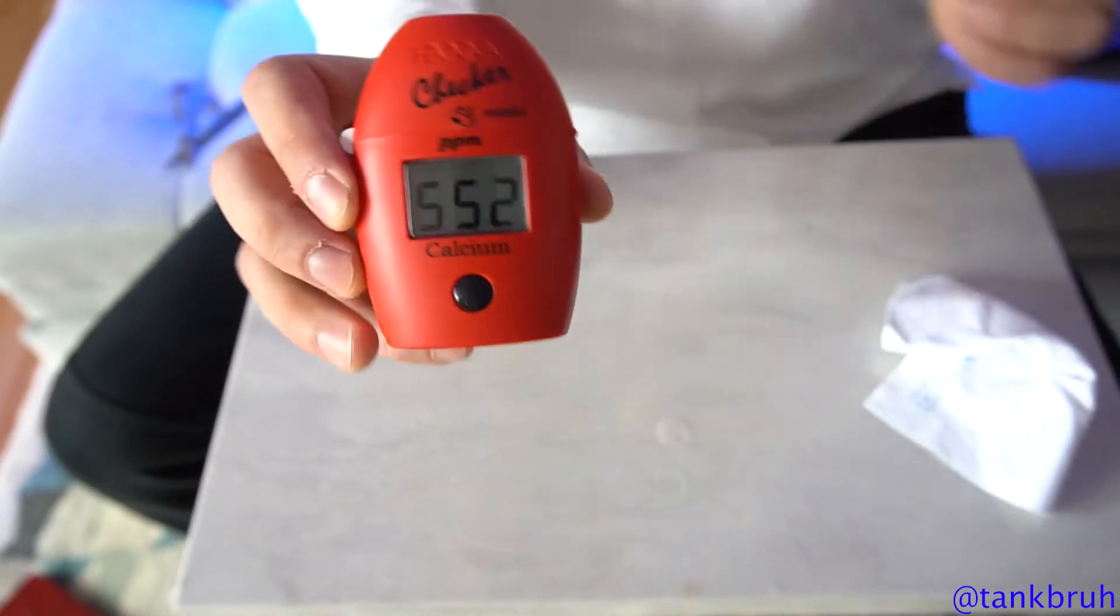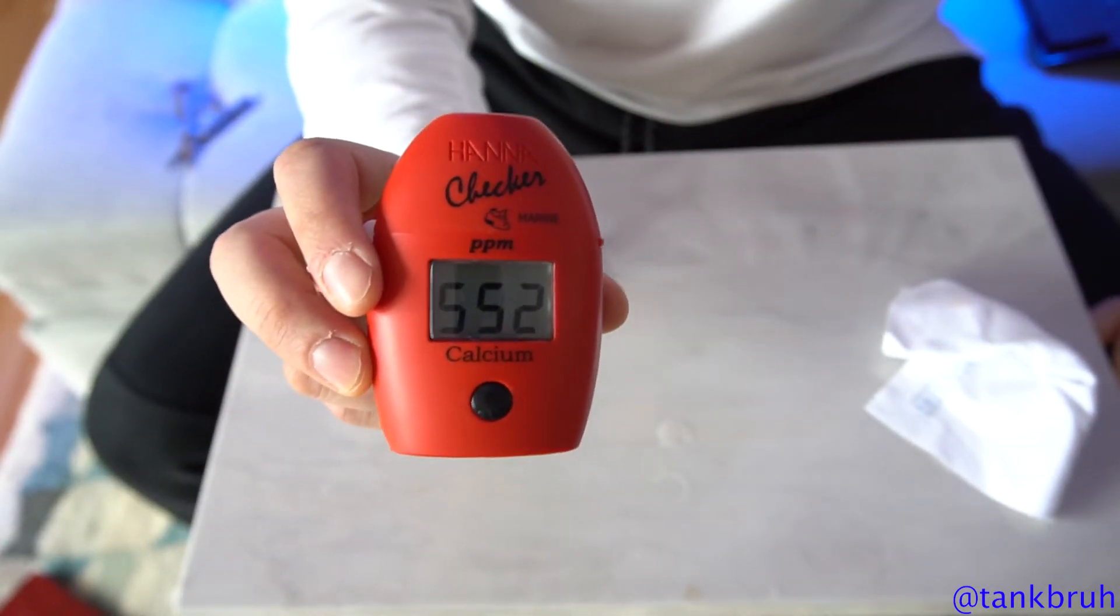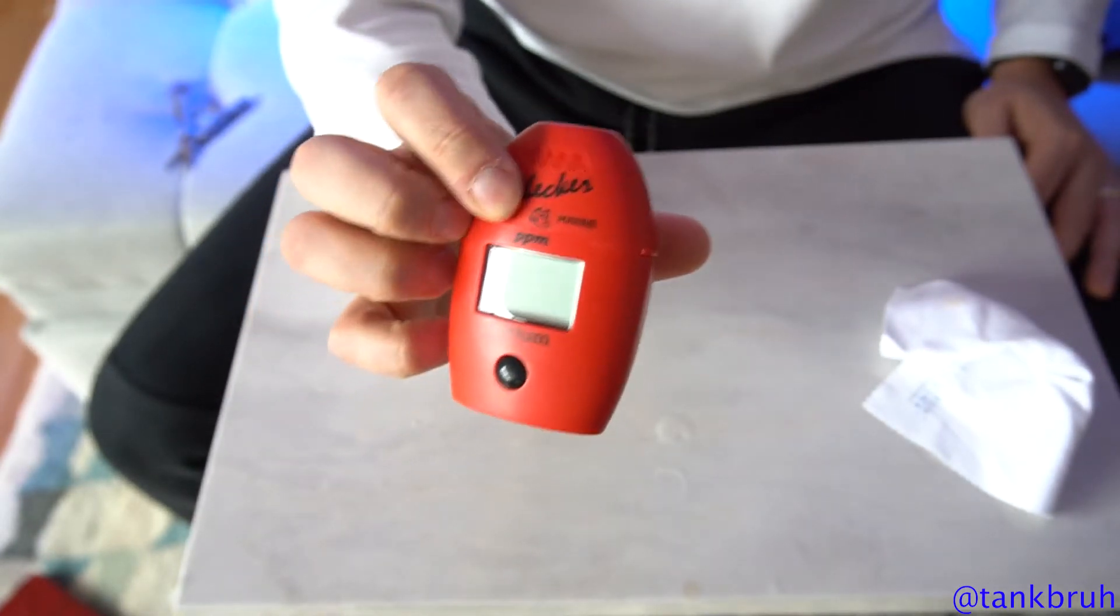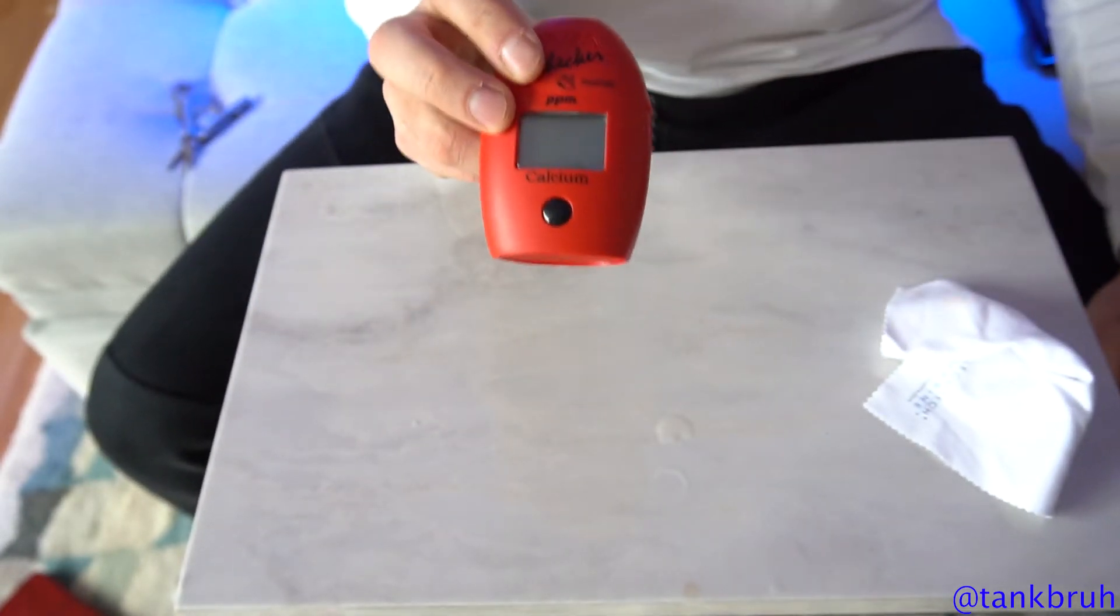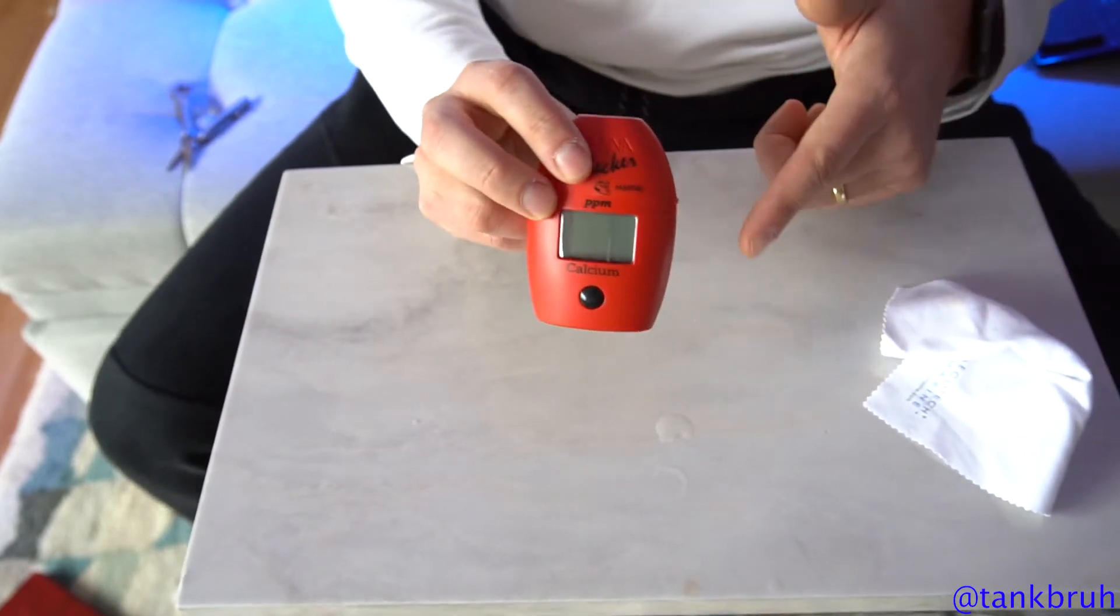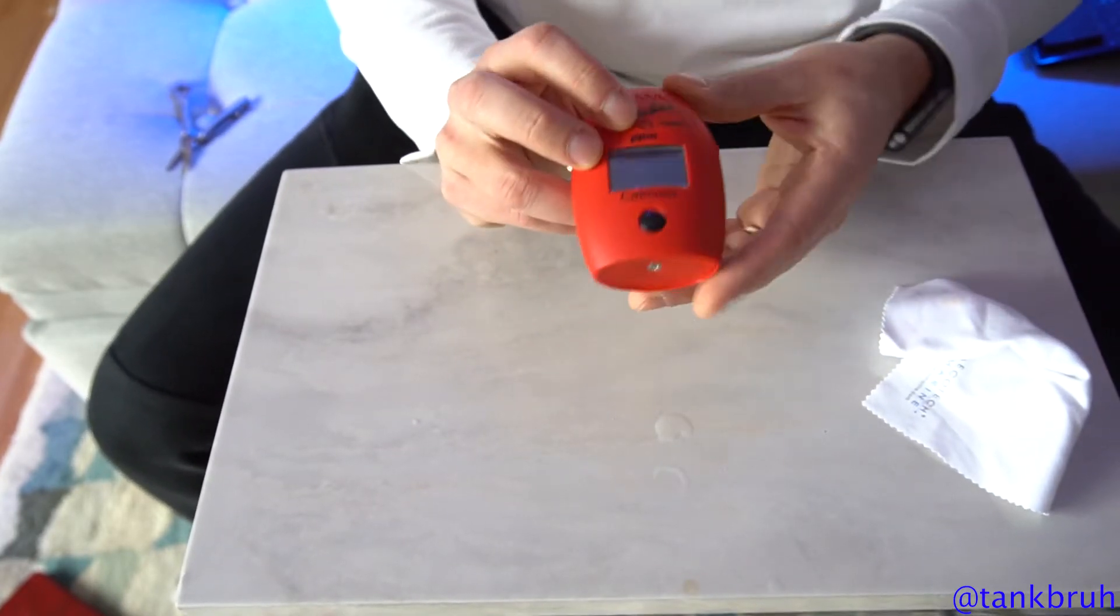My reading is extremely high right now. I had an accidental dosing of calcium that I put in there. So I'm waiting for that to kind of weed out. I will say that I'm a huge fan of all Hanna products. They seem very reliable, easy to use. I know there's a few steps for the calcium checker.